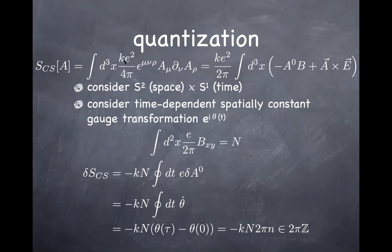If the coefficient k were not an integer, you could always find values of capital N and little n such that the gauge variation would make e^(iS) not single-valued — which is not allowed as it would violate gauge invariance. So this is how we know the coefficient k has to be an integer to be consistent with gauge invariance, which in turn leads to topological quantization of the Hall conductance and hence the integer quantum Hall effect.